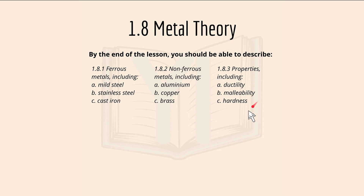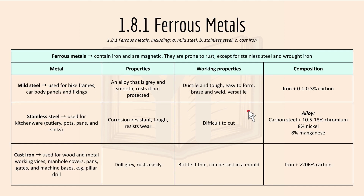We'll move on now to 1.8.1 ferrous metals. Ferrous metals are metals that contain iron and are magnetic, and they are prone to rusting except for stainless steel and cast iron.